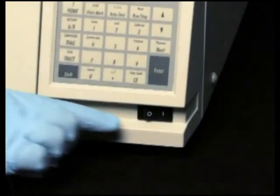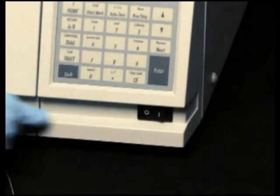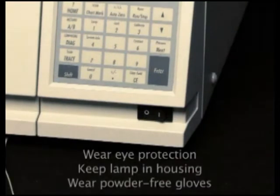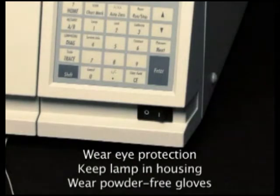To avoid eye damage from ultraviolet radiation exposure, turn the detector off and strictly adhere to the following procedure when replacing a lamp. Also, wear eye protection that filters ultraviolet light and keep the lamp in the housing whenever the detector is on.